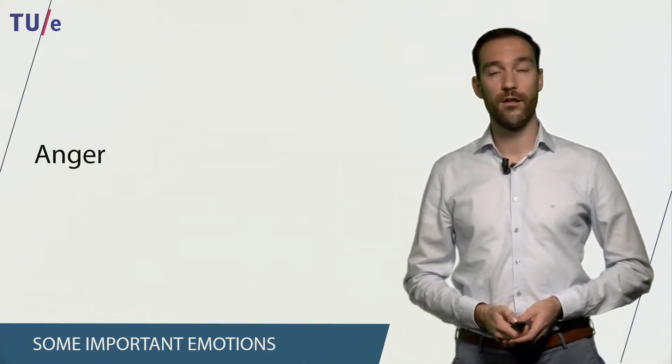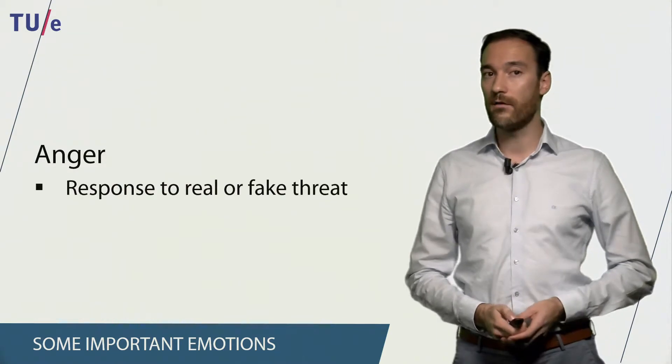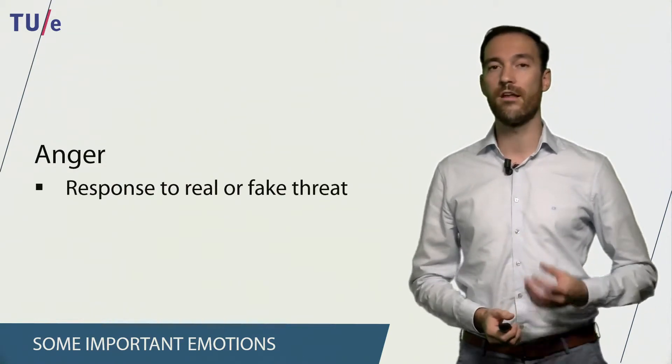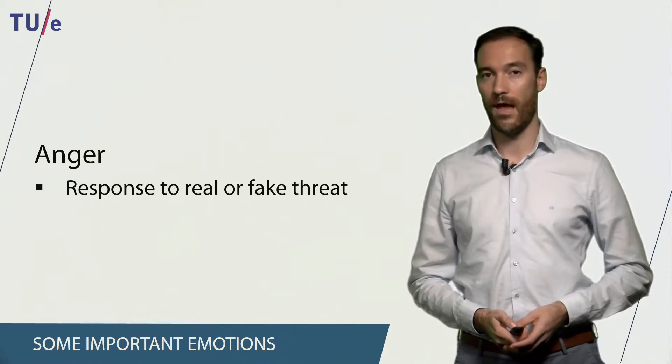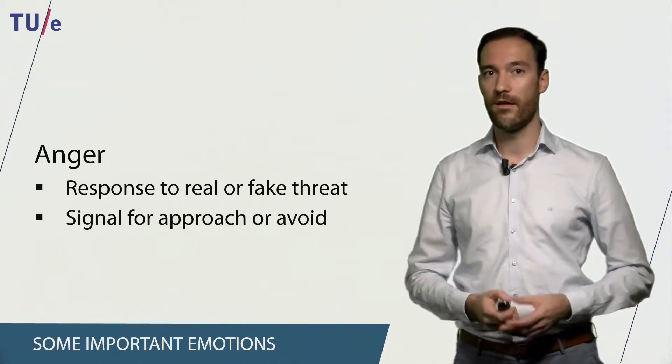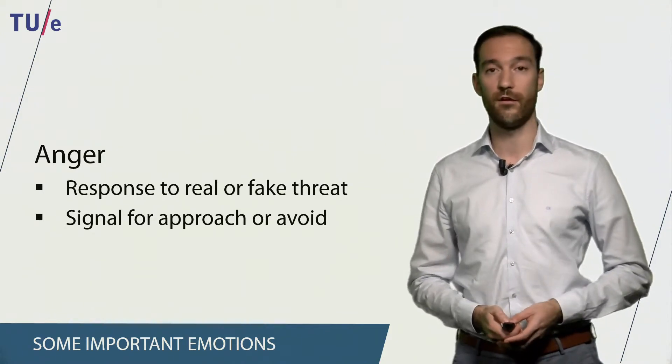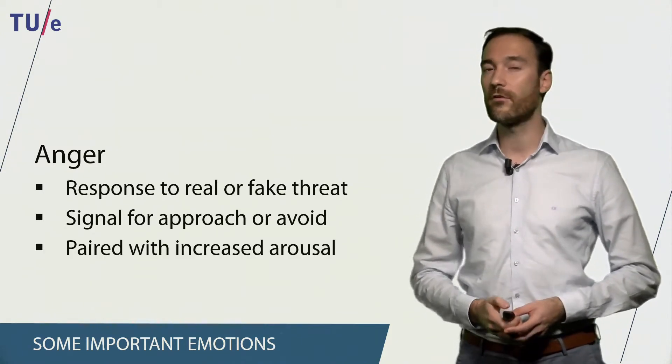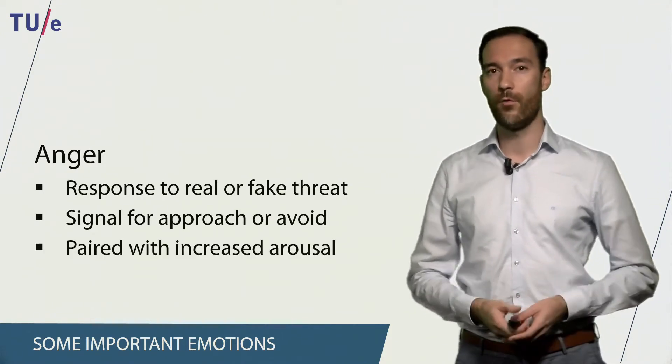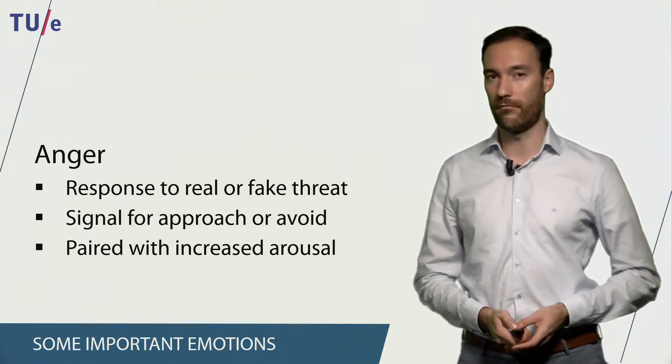The second emotion is anger. Anger is related to a response to a real or imagined threat. And when we feel angry at something, this is a signal for us to approach or avoid a specific situation. Anger is always related or paired with an increased physiological arousal.